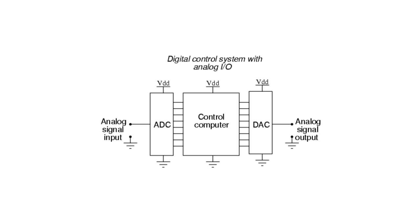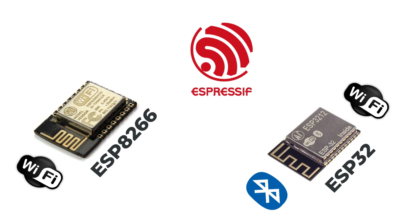Microcontrollers nowadays offer many useful functionalities like ADC and DAC that are crucial for real-world applications. ADC converts analog signals into digital signals and DAC does the opposite. Microcontrollers from Espressif like the ESP8266 offer Wi-Fi, and the ESP32 offers both Bluetooth and Wi-Fi on a single chip.